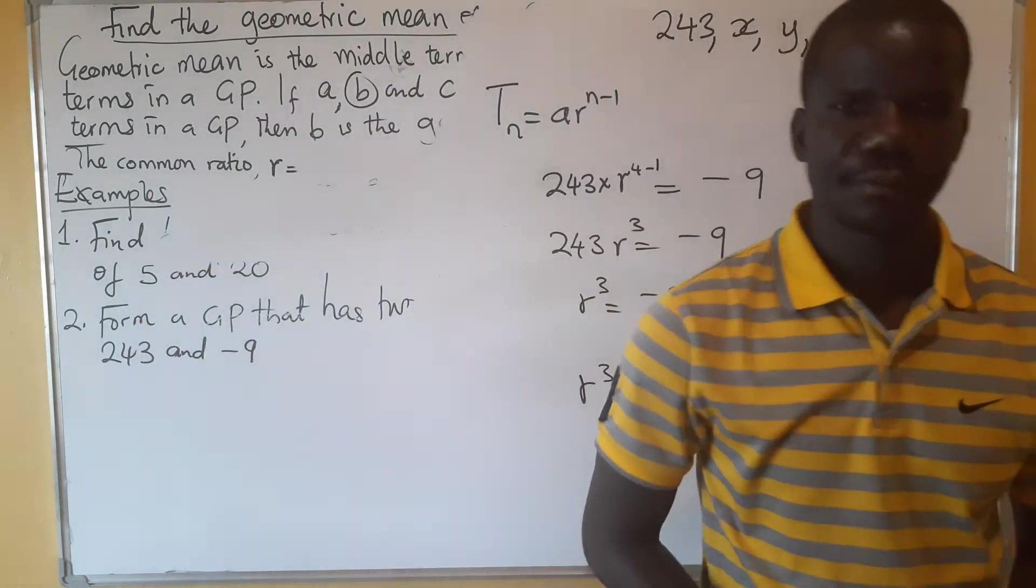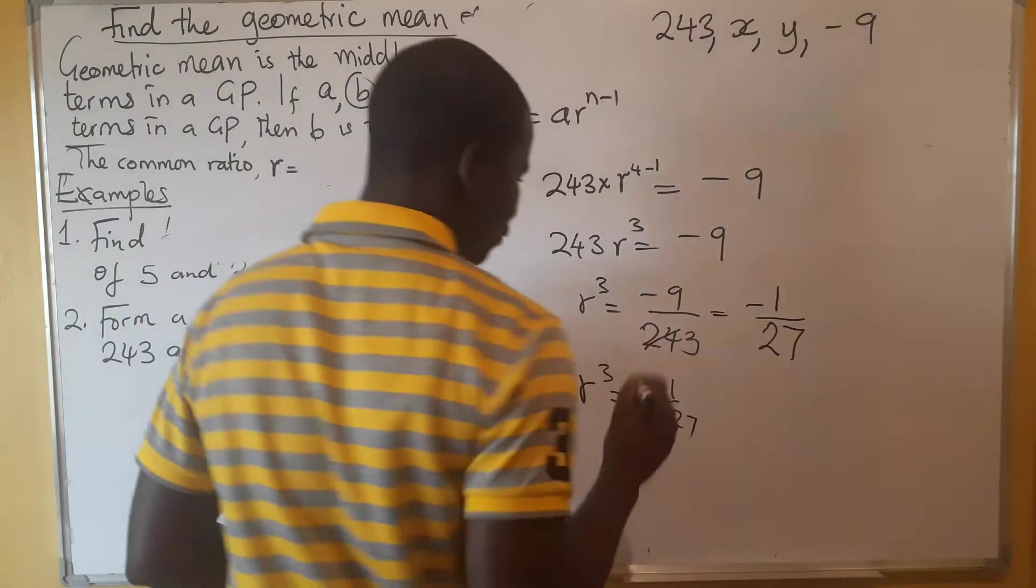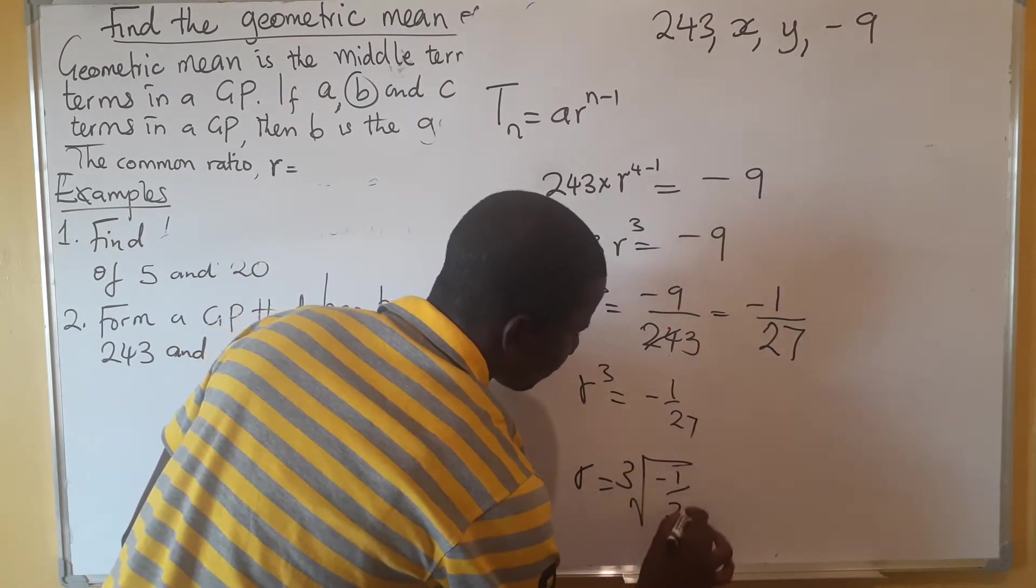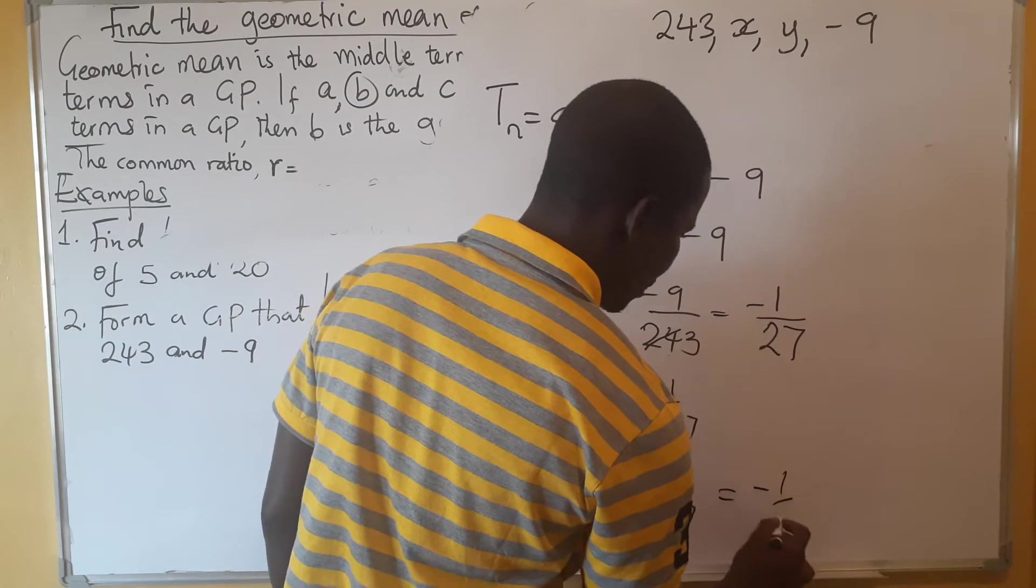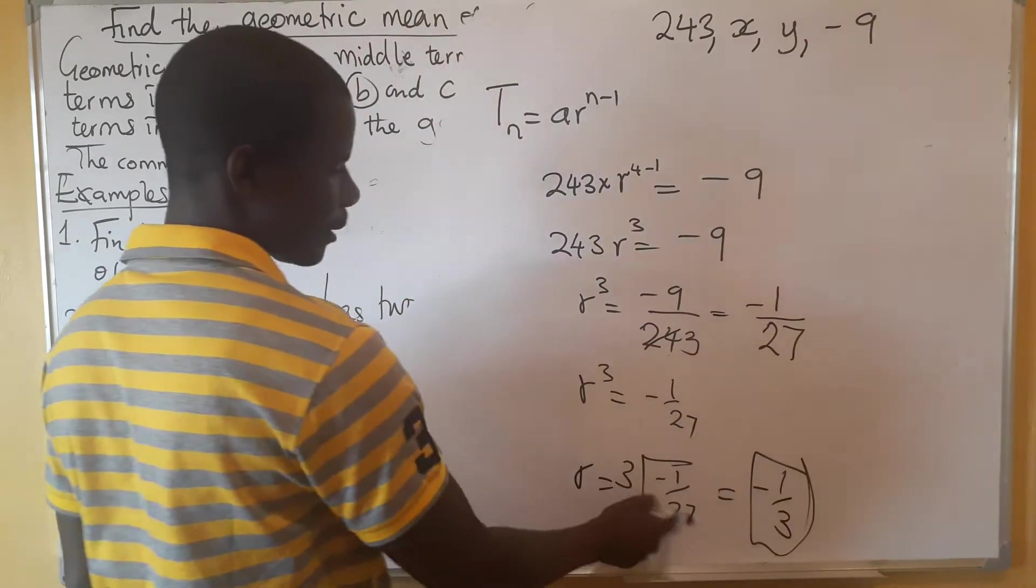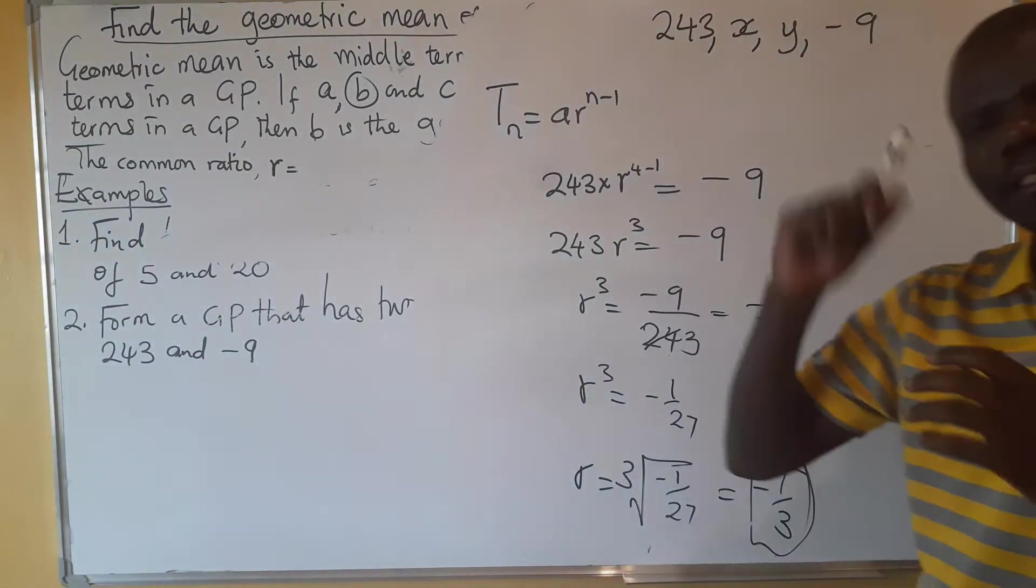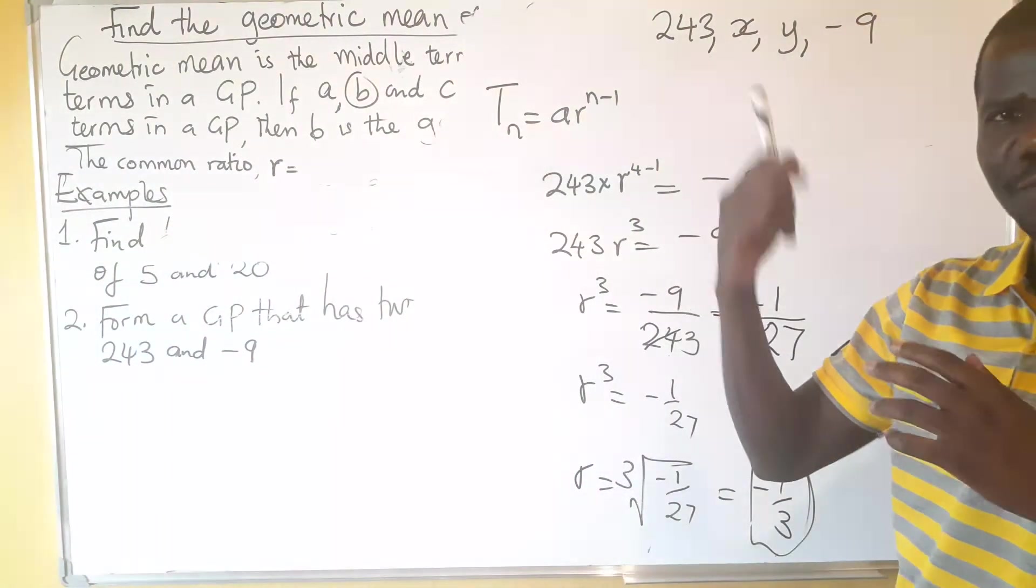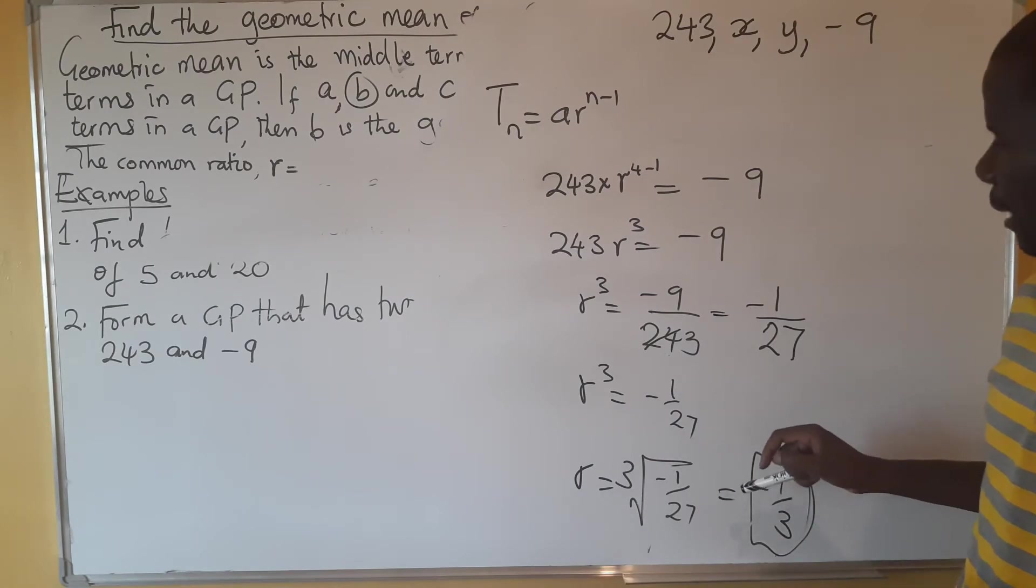After that, so we have this case now. So this is what we are getting as r cubed, then we proceed to find the actual value of r. Now we take the cube root to this side, and this is going to be negative 1 over 3. This is what is going to be our r. When you multiply this one 3 times it will take us back to this one. So this is the value of our r, which is the common ratio. It is the same thing that we did even when we were looking at the arithmetic mean. If you remember, we used the formula for the nth term for that particular progression.